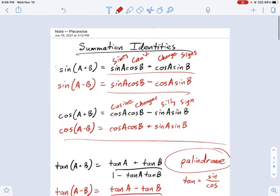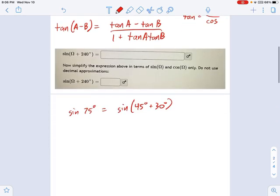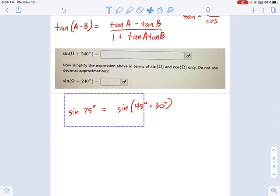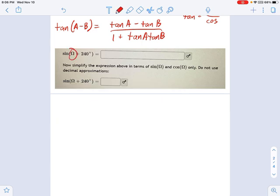From there, we go back into these equations for A and B as the angles. Well, this time, I have one variable, which in this case is omega, and one angle, which is 240. So sometimes people look at that and kind of freak out.